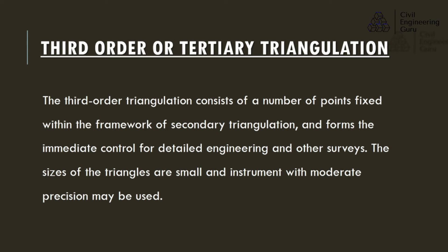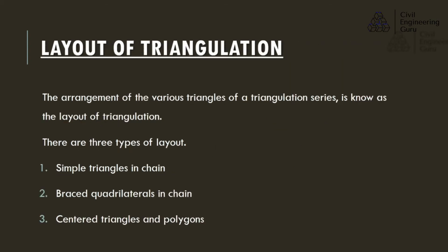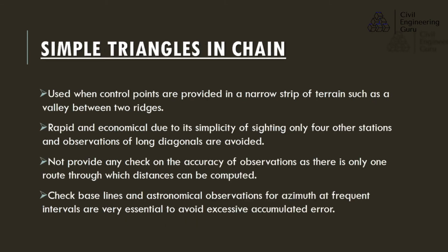Layout of triangulation: the arrangement of the various triangles of the triangulation series is known as the layout of triangulation. There are three types: simple triangles in chain, braced quadrilaterals in chain, and centered triangles and polygons. Simple triangles in chain are used when control points are provided in a narrow strip of terrain, such as a valley between two ridges. It is rapid and economical due to its simplicity; observations of long diagonals are avoided. However, it does not provide any check on the accuracy of observations, as there is only one route through which distances can be computed. Check baselines and astronomical observations for azimuth at frequent intervals are essential to avoid excessive accumulated error.